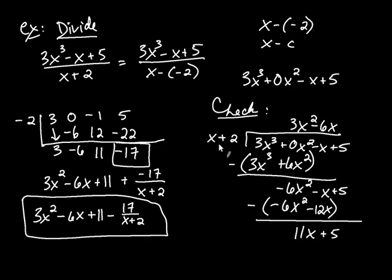And I take that 11 and distribute it. So it's 11x plus 22. Put parentheses around that. Subtract off the whole thing, just like before. So I get negative 17. And what would my answer be? Well, it would be 3x squared minus 6x plus 11 plus the remainder negative 17 over x plus 2, which is exactly what I got right here.